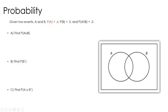Next problem. We are given two events: probability of A is 0.4, probability of B is 0.5, and A and B is 0.3. So, we know the intersection is 0.3 — that was given to us. Sometimes I like to fill out what we know in these diagrams before I really attack the questions.